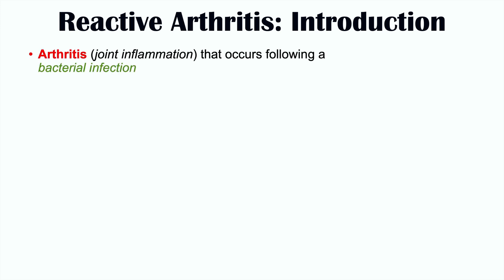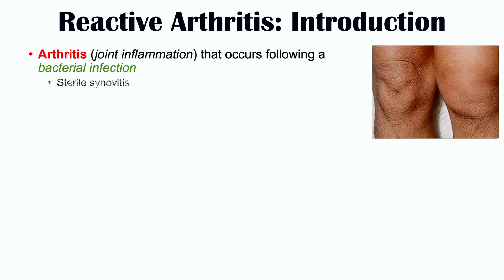Reactive arthritis is arthritis — joint inflammation — that occurs following a bacterial infection. It's key that it occurs after a bacterial infection has already occurred. When looking at the joint itself, although it's inflamed, it is sterile. It is a sterile synovitis, meaning there's no bacteria infecting the joint itself. It is a process that occurs after some other bacterial infection in another part of the body.